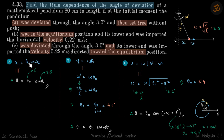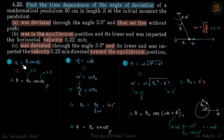Let's say it's taken to an extreme and then set free. In the case of linear SHM, our equation will be x = A cos(ωt) — this is the equation when the particle starts from the extreme. So if this is x = 0 and it starts here, then x = A cos(ωt). The analogous situation in angular SHM will be θ = θ₀ cos(ωt). You can also derive this by writing x = lθ and A = lθ₀, so l cancels and you get θ = θ₀ cos(ωt).